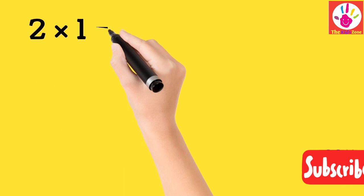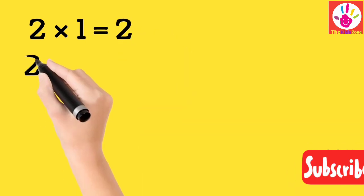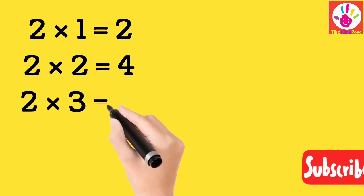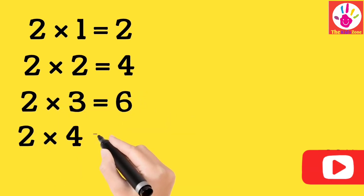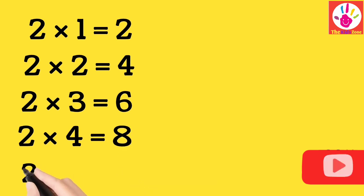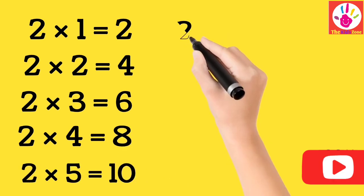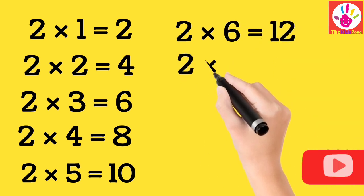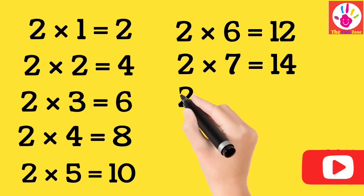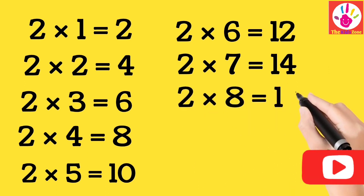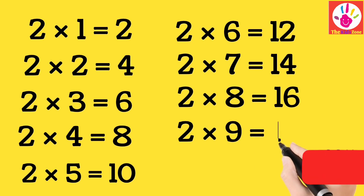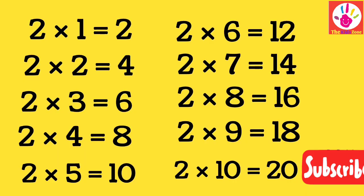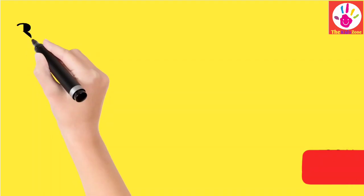2 ones are 2, 2 twos are 4, 2 threes are 6, 2 fours are 8, 2 fives are 10, 2 sixes are 12, 2 sevens are 14, 2 eights are 16, 2 nines are 18, and 2 tens are 20.